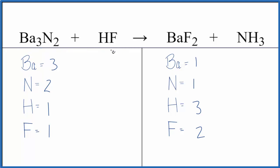Let's look at the type of reaction first. It looks like the barium and the hydrogen are switching places. Since those are switching places, this would be a double displacement reaction.